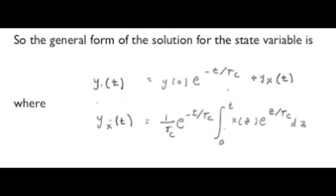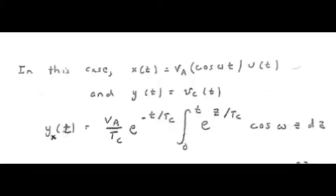We've expressed X as VA times cosine omega T plus phi. Let's put that expression into the integral and focus for now on the Y sub X term.